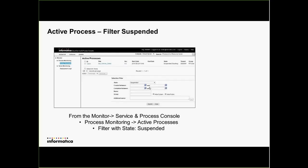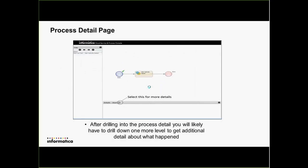Once you drill down from that page into the process detail, you can find out where things went wrong — for example, it started and then got to the service call and got suspended from there. To do more complicated repair work, you currently have to drill down into a greater level of detail which exposes some internals we call BPEL — Business Process Execution Language. From there you're able to take advantage of a lot of capabilities that customers really love. The first thing you'll do is drill in using the 'go to detail' button.